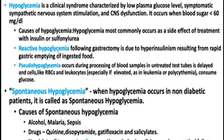There is a term called reactive hypoglycemia, which occurs following gastrectomy due to hyperinsulinism or hyperinsulinemia resulting from rapid gastric emptying of ingested food from the stomach into the small intestine. There is one more term called pseudo-hypoglycemia: when a blood sample is collected in an untreated test tube and there is a delay in estimating the blood sugar, sugar is utilized by high leukocyte count, high RBC count, or due to technical problems.